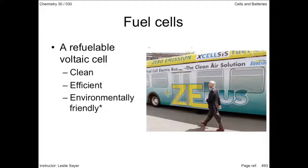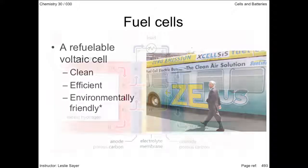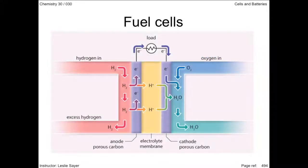I have an asterisk next to the environmentally friendly bullet because while the waste product of a hydrogen fuel cell is pure water, the source of the hydrogen is provided by the conversion of ethane to ethene by the petrochemical industry—an expensive process and one that requires a lot of energy. At present, this energy comes from fossil fuel combustion, countering the ecological benefits of the hydrogen fuel cell.